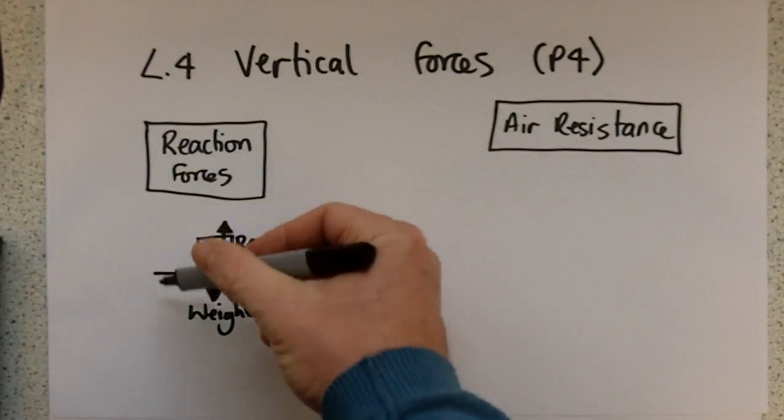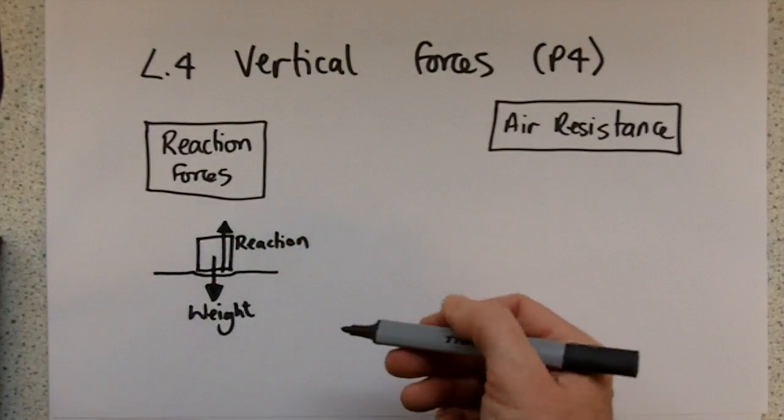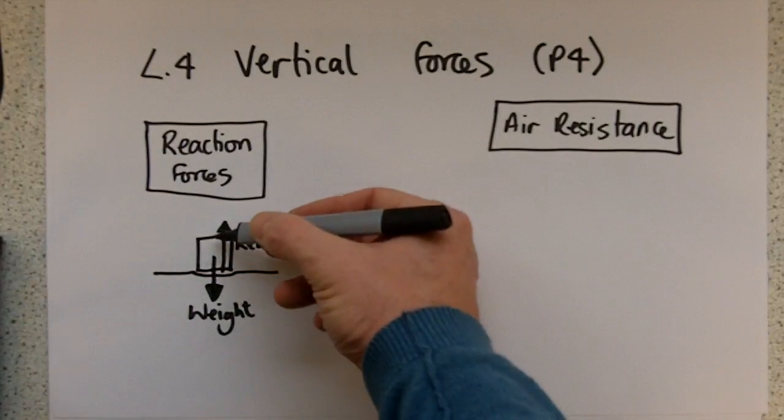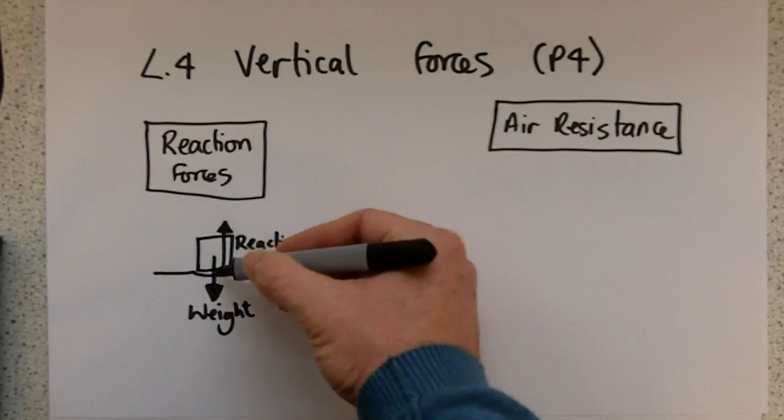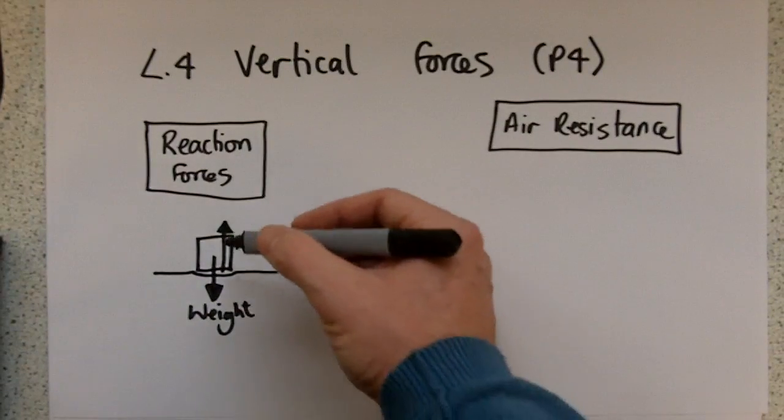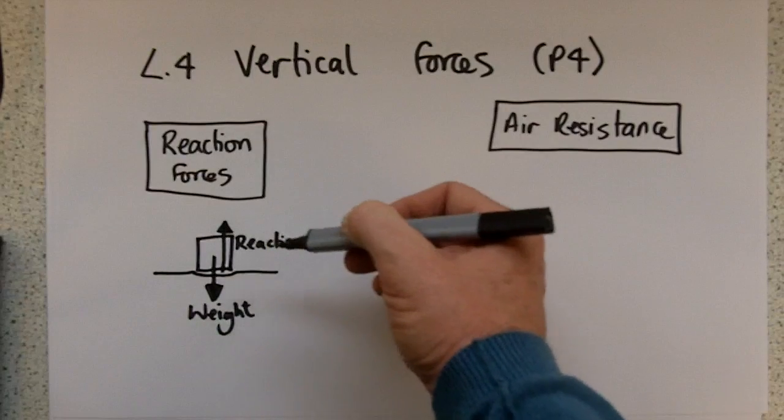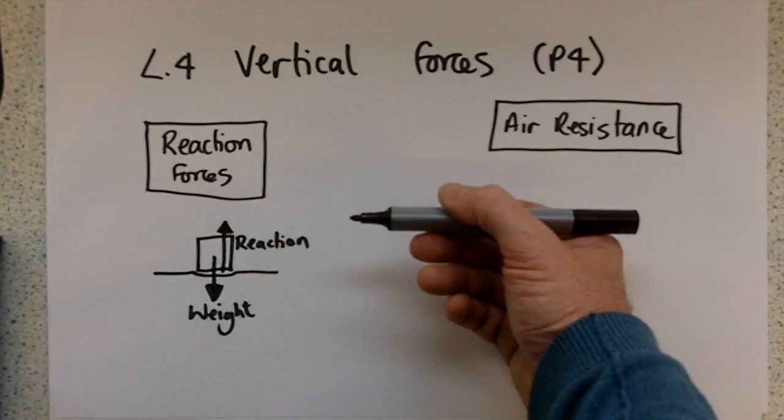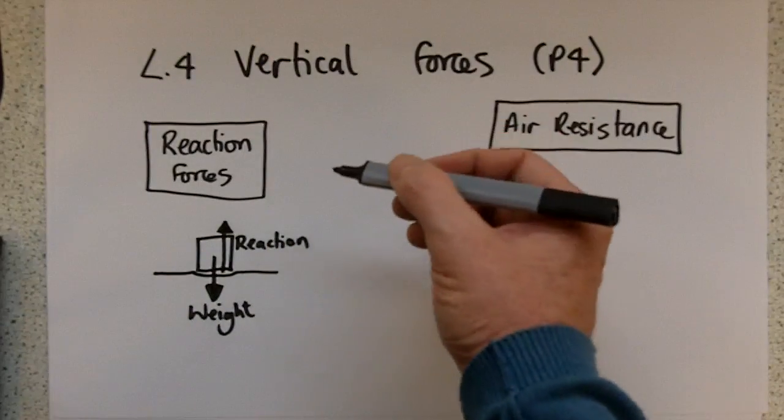So the reaction force is always equal and opposite. If something is stationary resting on a solid surface, the reason it's not falling through that surface is because there are two forces interacting here, and they are equal and opposite. And if the two forces are equal and opposite, then we say the forces are balanced. So that's reaction forces.